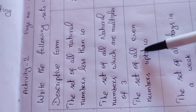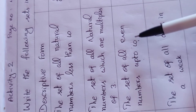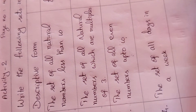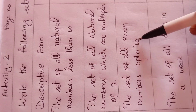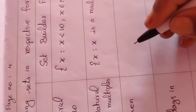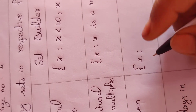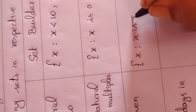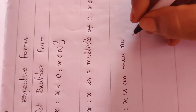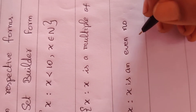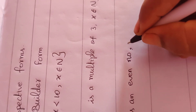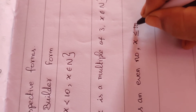The next example: the set of all even numbers up to 10. In set builder form: set of all x such that x is an even number and x is less than or equal to 10.